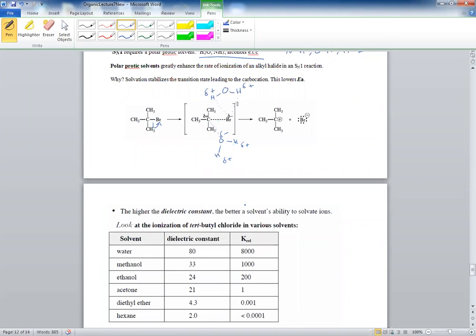There's a measure—we're not going to go into it, it's more advanced—a measure of how good these solvents are at solvating the ions. That's called the dielectric constant. The higher the number, the better the protic solvent will be.